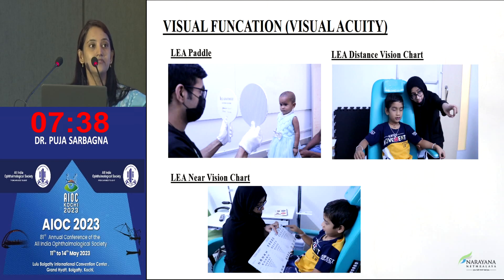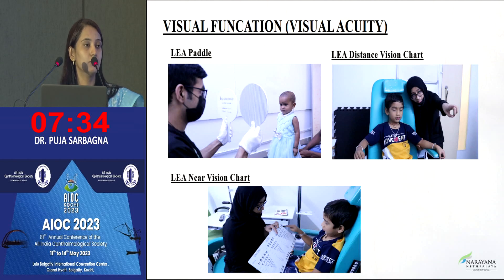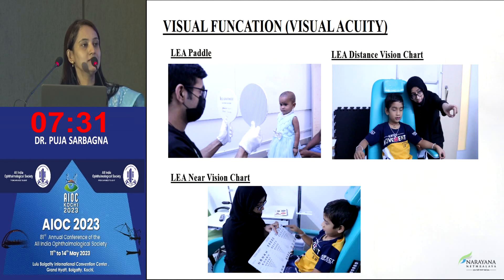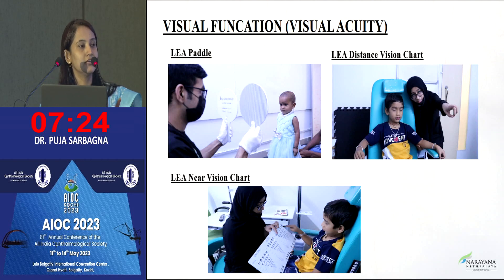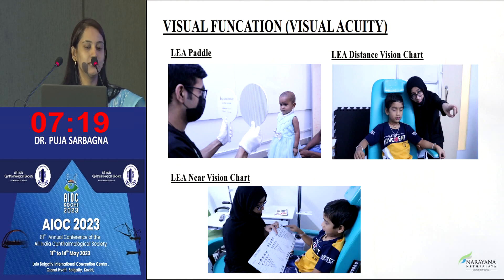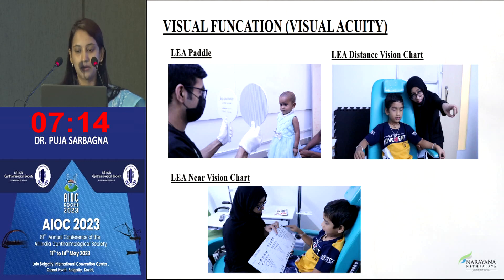In CVI cases, we start assessment from four months using the Lea Paddle — we can also do the lesser edge. We do not use TAC in CVI because that test requires proper head control and positioning. But Lea Paddle can be done in any position, including lying down. We try to maintain a 27 to 38 centimeter distance when performing the Lea Paddle.